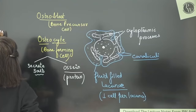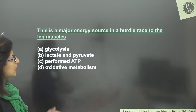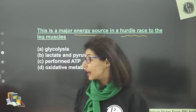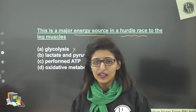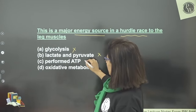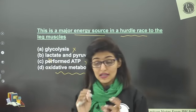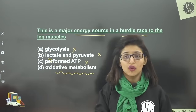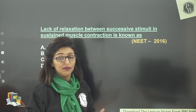Tomorrow we will start the human skeletal system in detail. Let's have a quick sprint with a few questions. Q: What is the major energy source in a hurdle race for leg muscles? Glycolysis gives only 2 ATP — very incomplete. The answer is oxidative metabolism — myoglobin uses oxygen to produce ATP. In a long race it has to be oxidative, but it depends on how much myoglobin you have and how much you've practiced.